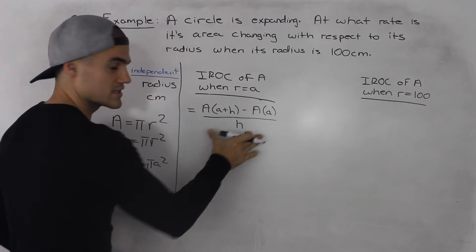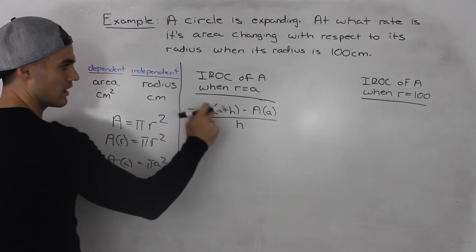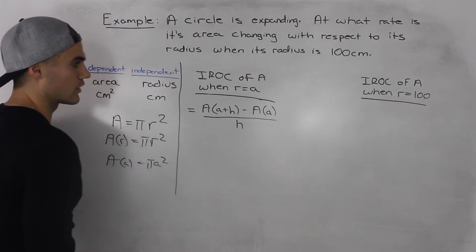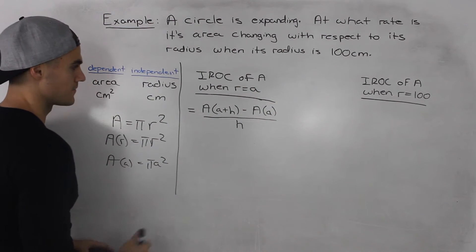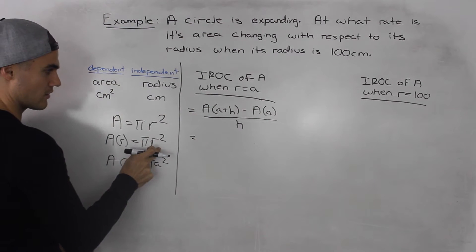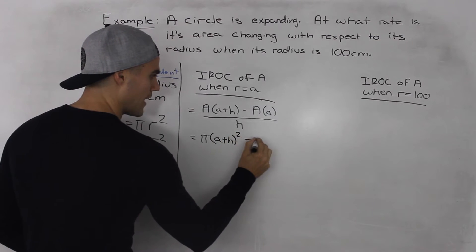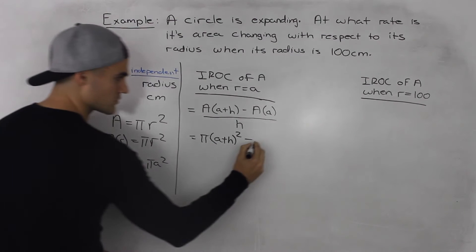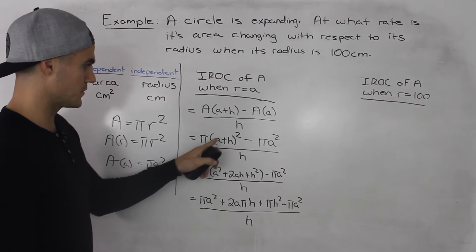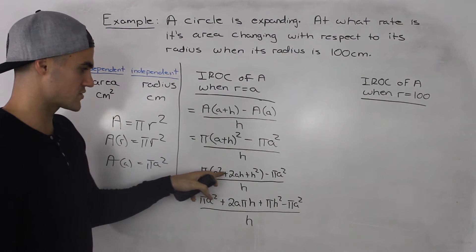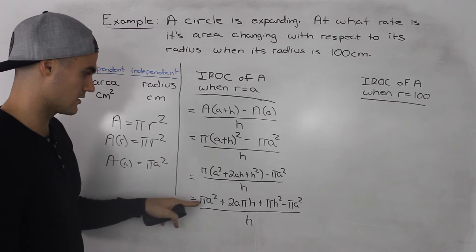To find the instantaneous rate of change of the area when r equals a, we use the difference quotient: A(a + h) minus A(a), all over h. Here capital A represents the area function and small a represents the general value of the radius. Plugging into our formula, we get π(a + h)² minus π a², all over h. Expanding (a + h)² by foiling gives a² + 2ah + h², with π still in front, minus π a².